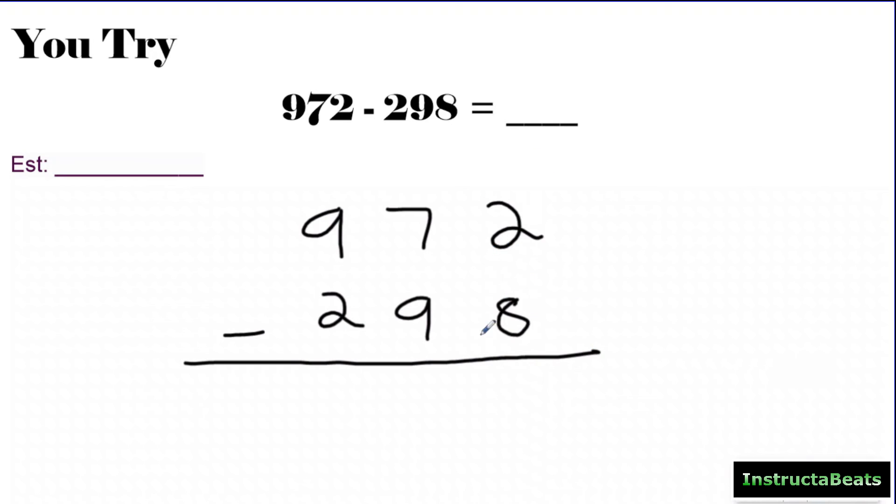2 minus 8. 8 is bigger than 2. So more on the floor, go next door, and get 10 more. So I'm getting 10 ones, which is going to make this a 12. 12 minus 8 is 4. If you're not sure about your subtraction facts, you could actually count up from 8, 8, 9, 10, 11, 12, and you could do 8 plus 4 equals 12. So if you need to think about this as addition to get your addition and subtraction facts, go ahead and do that.